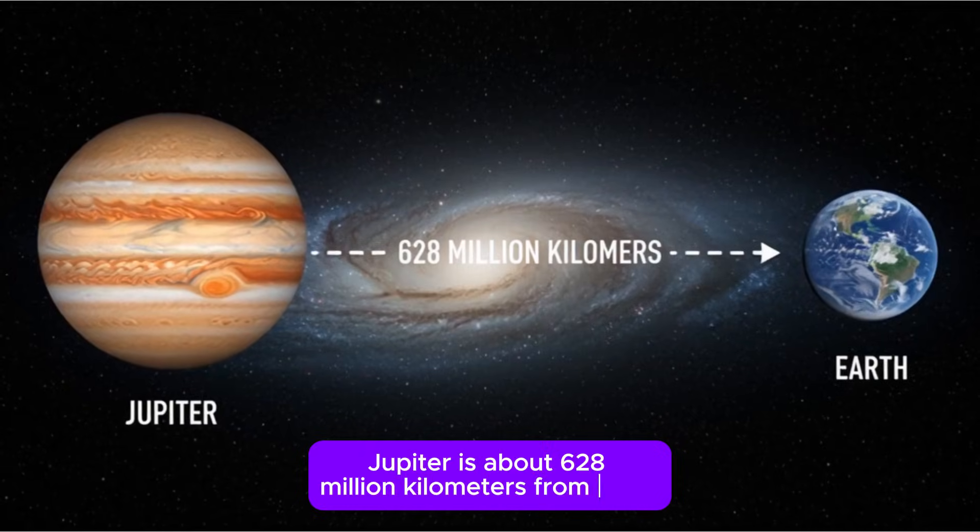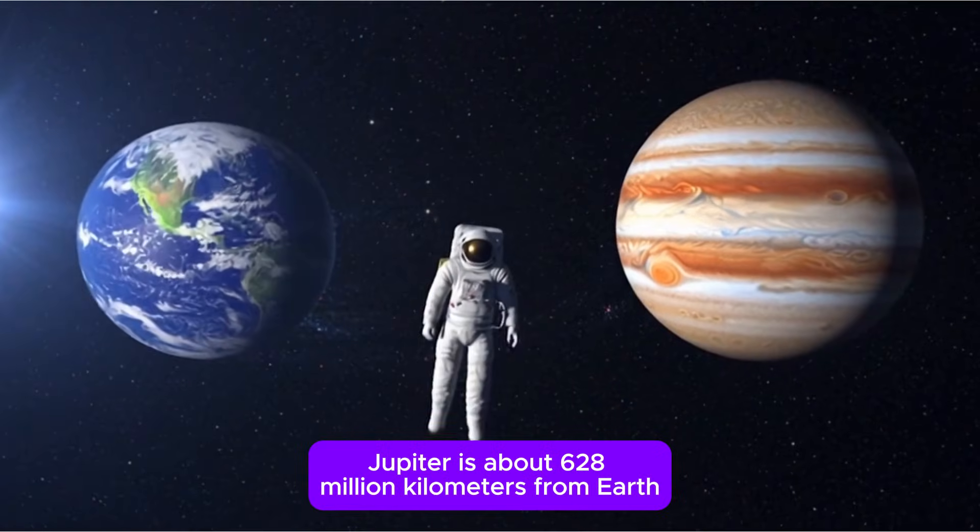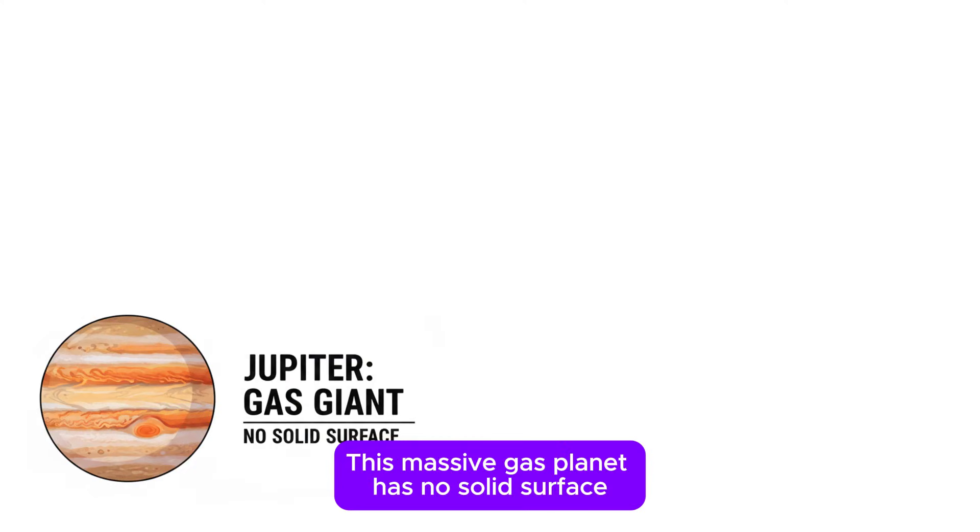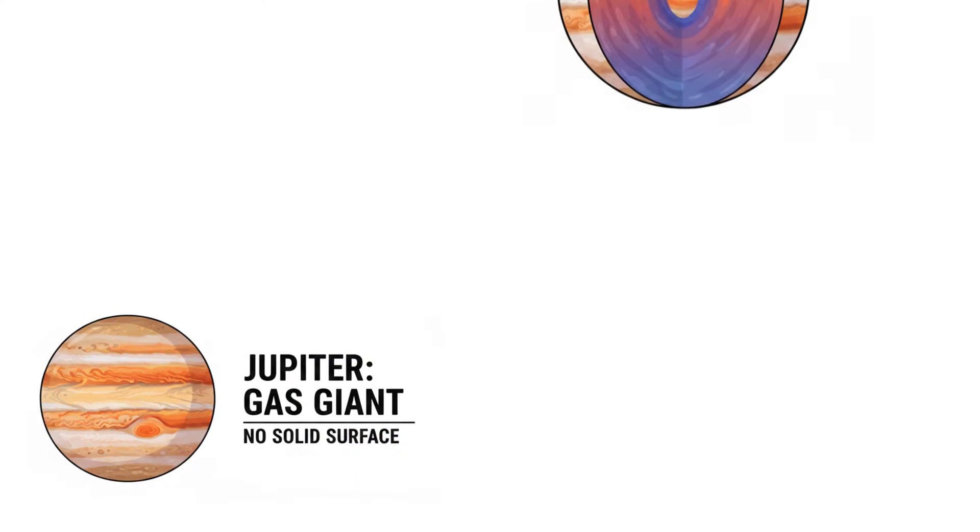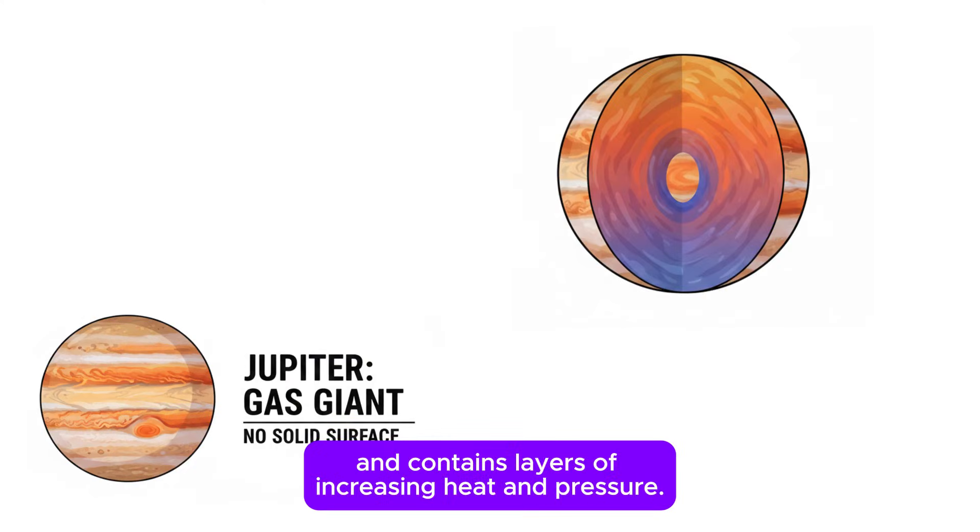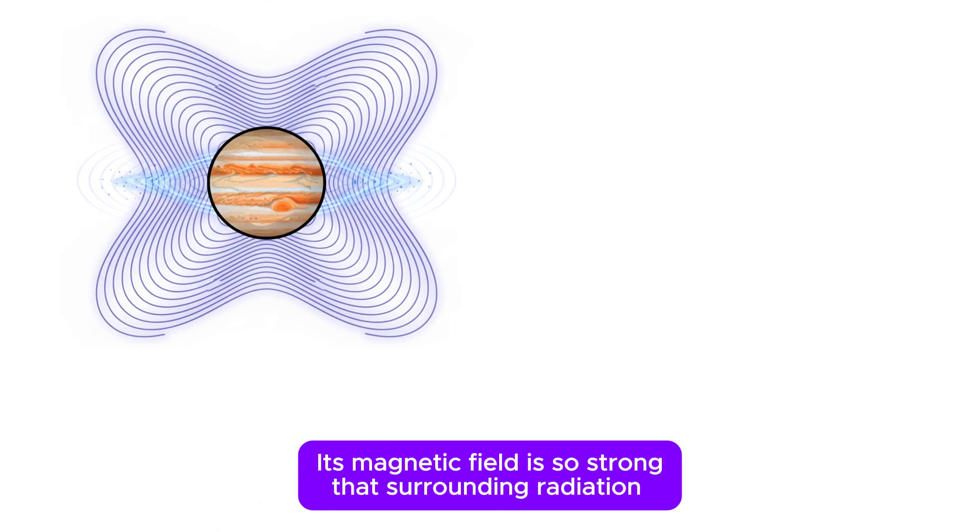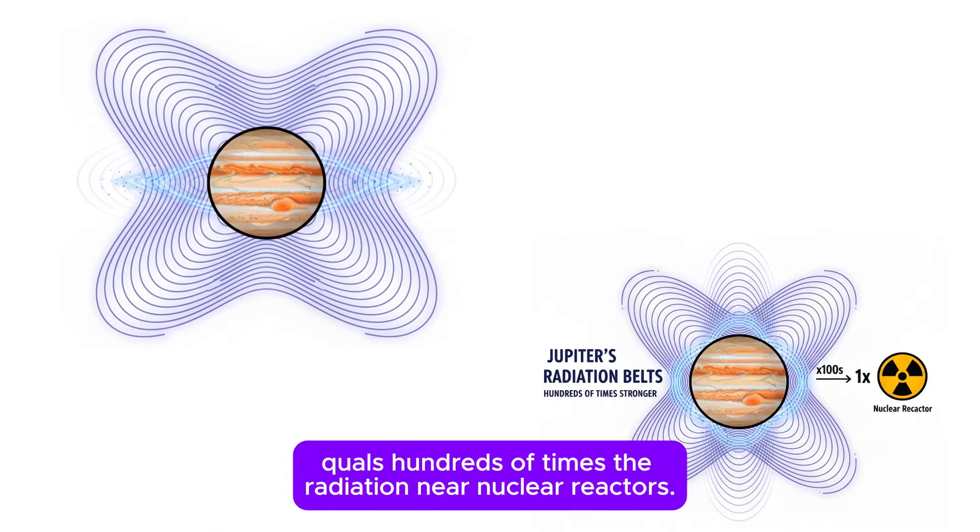Jupiter. Jupiter is about 628 million kilometers from Earth. This massive gas planet has no solid surface and contains layers of increasing heat and pressure. Its magnetic field is so strong that surrounding radiation equals hundreds of times the radiation near nuclear reactors.